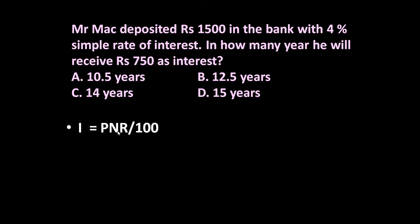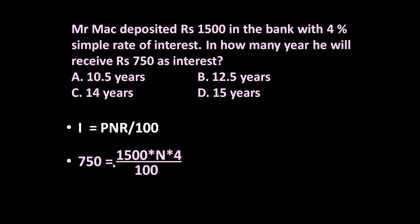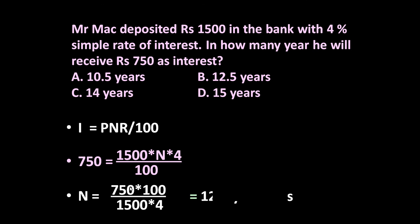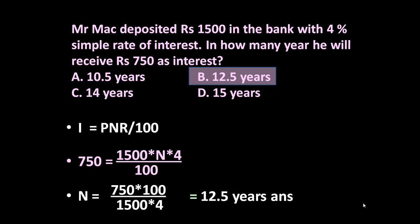We have to determine the value of N, the number of years. Substituting all values: I is 750 because he wants Rs.750 as interest. So 750 = 1500 × N × 4 / 100. Simplifying: N = 750 × 100 / (1500 × 4) = 12.5 years. So the answer is 12.5 years.